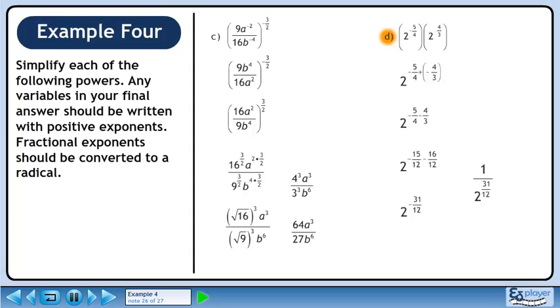Now write the power in the denominator with a positive exponent. The answer is 1 over the 12th root of 2 raised to the power of 31.